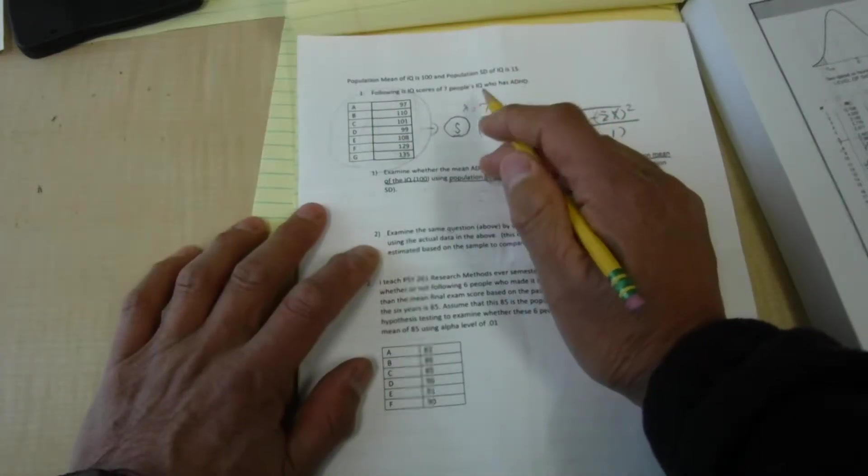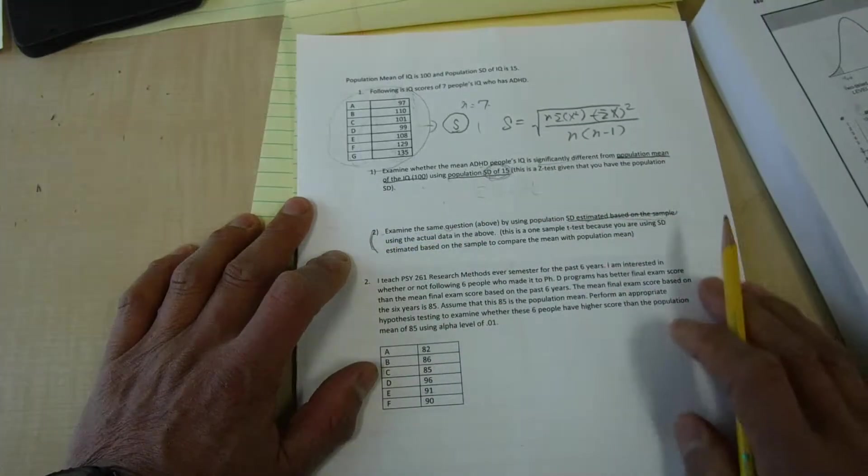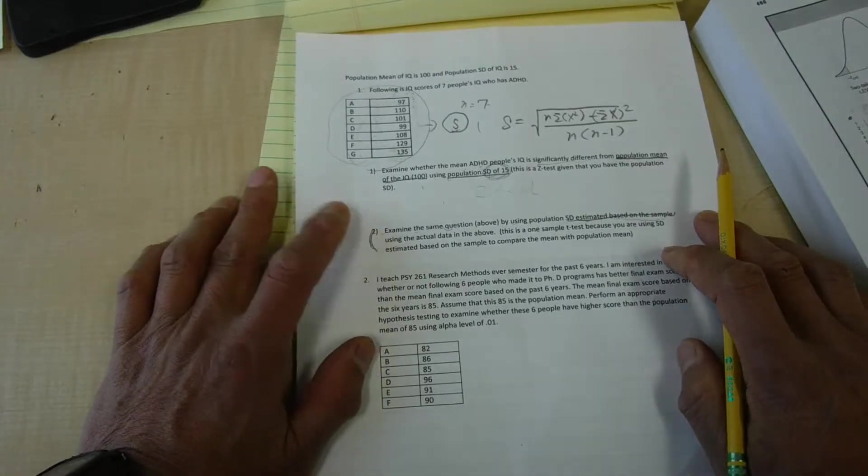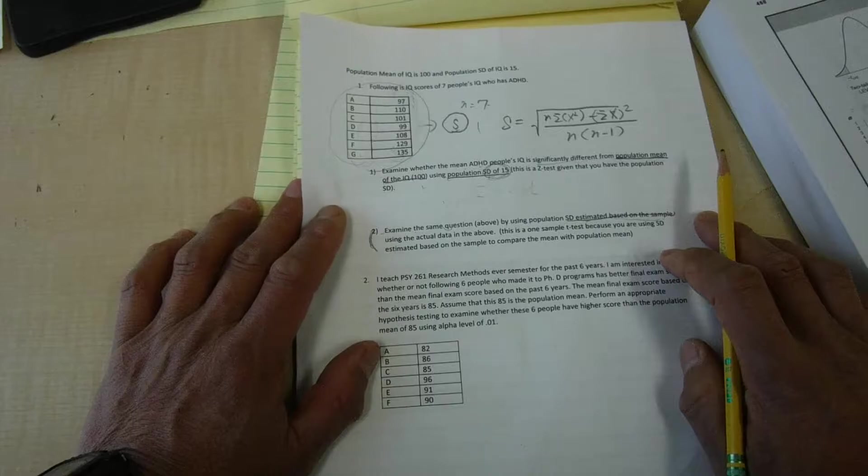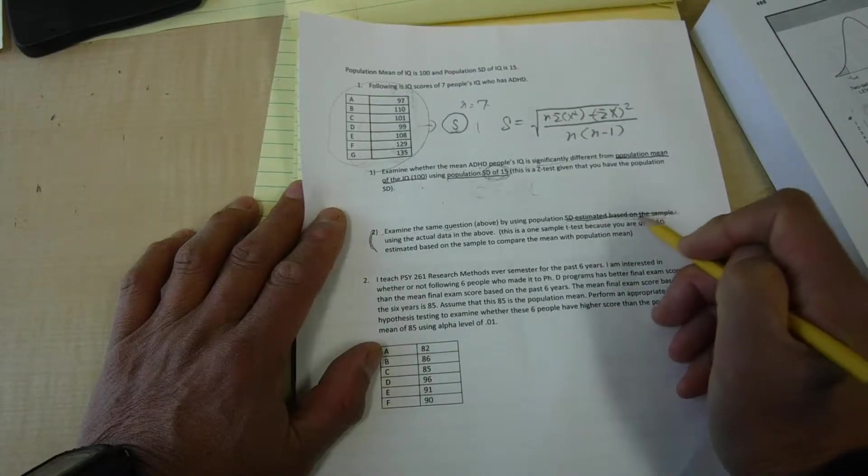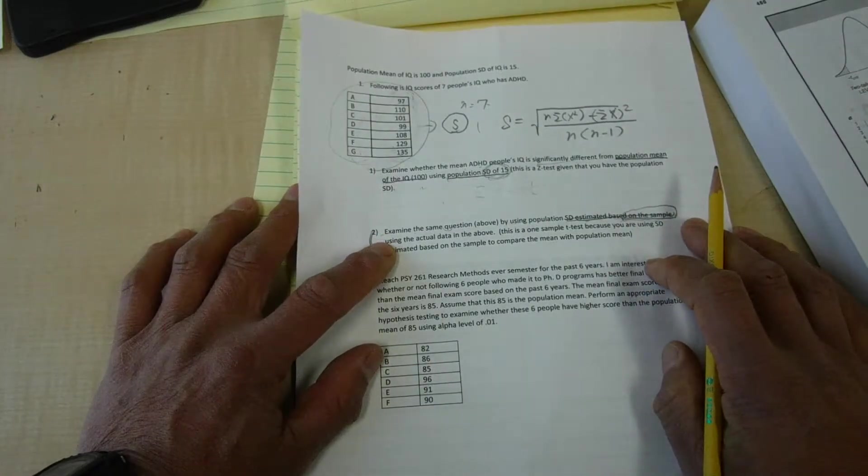In the practice computation, this is the question, number two. The question says, examine the same question above by using population standard deviation estimated based on the sample, the actual sample, using the actual data in the above.